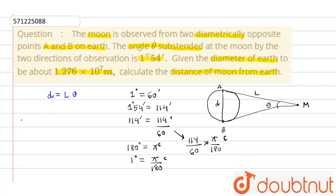Now putting the values of D and theta, we get L = 1.276 × 10^7 / theta = 1.276 × 10^7 / [(114/60) × (π/180)]. This will come out in meters. By solving this, we get L = 3.84 × 10^8 meters.